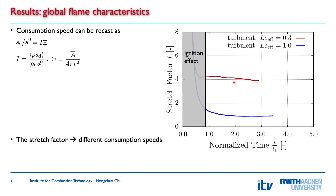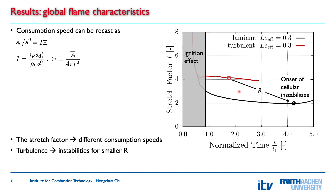As expected, the difference in stretch factor is also about a factor of 4. When comparing the laminar and turbulent non-unity Lewis number kernels, the laminar kernel's stretch factor decreases with increasing kernel radius due to the Markstein effect, until the onset of cellular instabilities. In contrast, the turbulent kernel exhibits a very high stretch factor even when it is still smaller than the critical radius. This means that turbulence triggers the instabilities for flame kernels with a radius smaller than the critical radius.